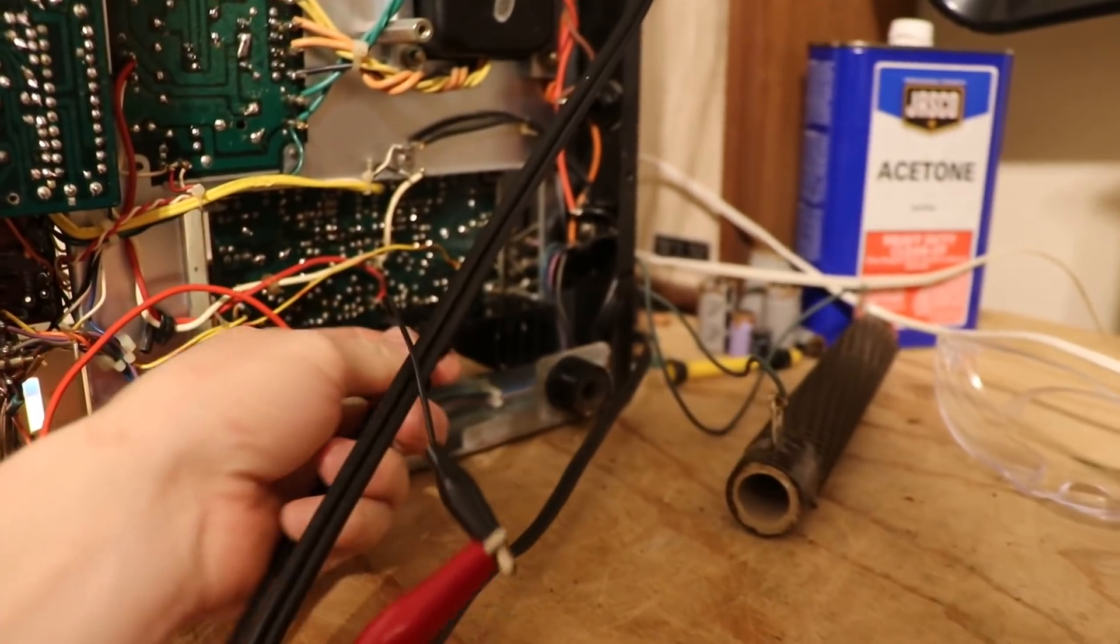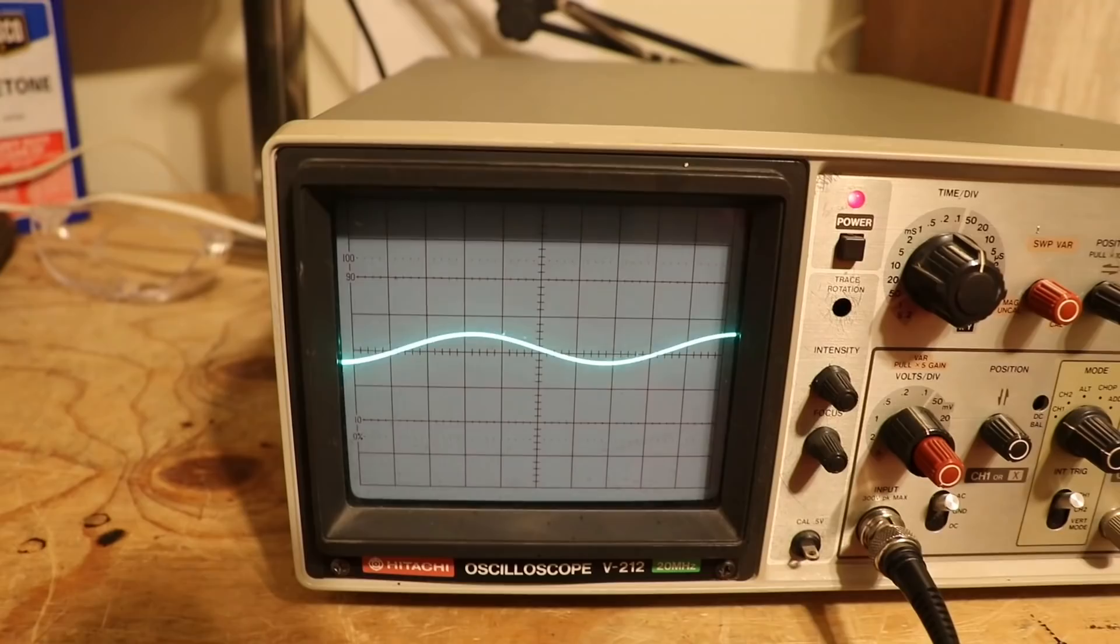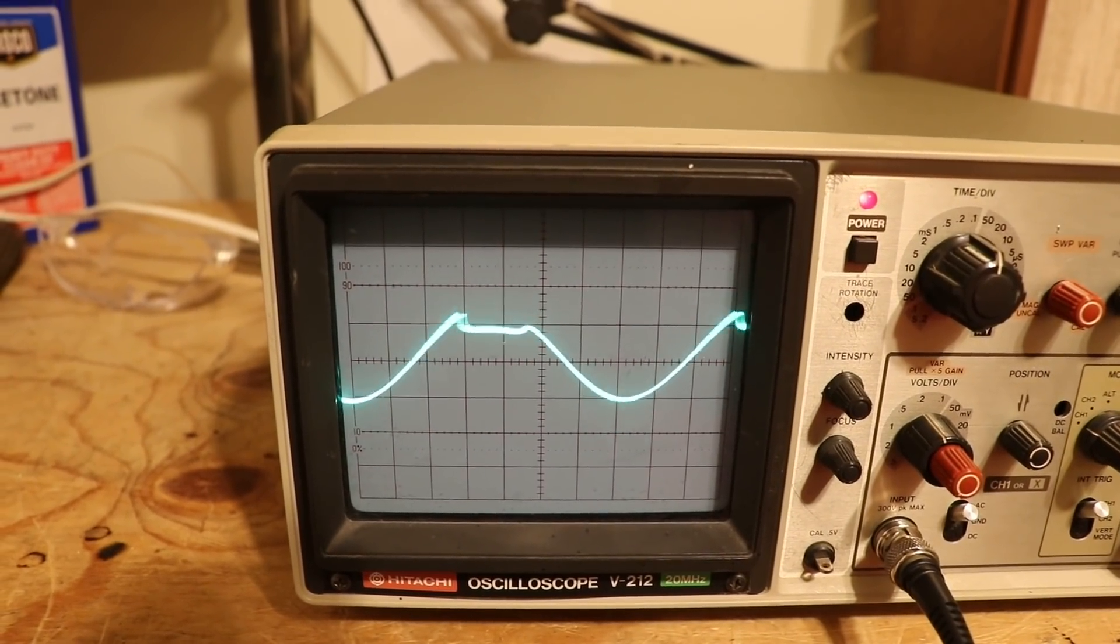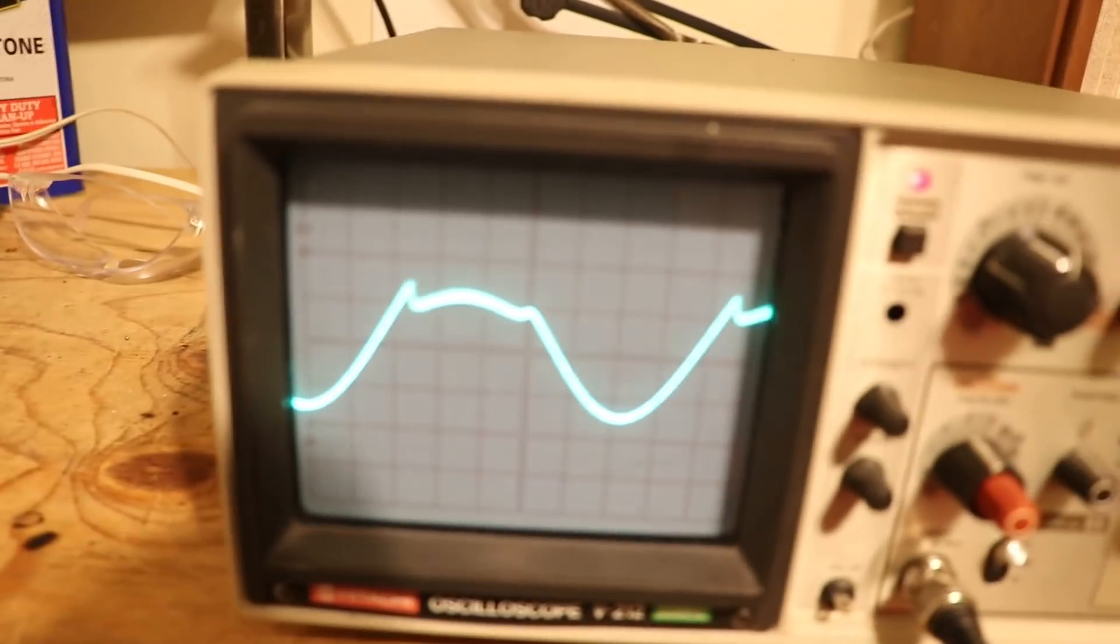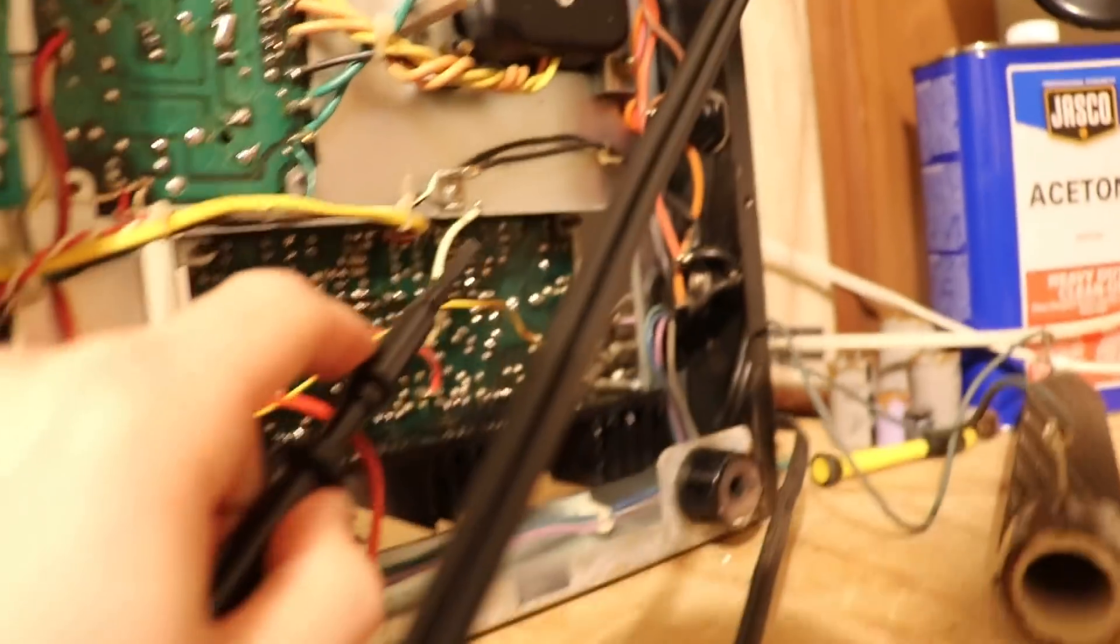So here we are at the load resistor, right? And we've got ground going to ground with our red little jumper here. So, let's connect to the output right there. And we see that it's definitely bad at the output right there.